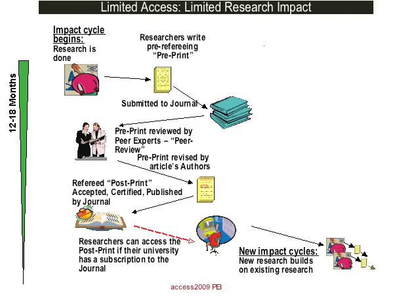The research impact cycle goes like this: first the research is done, then it's written up, submitted to a journal, peer reviewers referee it, it's revised by the author, sometimes re-reviewed, and then finally, if it's accepted, it becomes the postprint — certified as published by the journal — and then researchers can access the postprint if their university has a subscription to the journal, and then new impact cycles can begin.